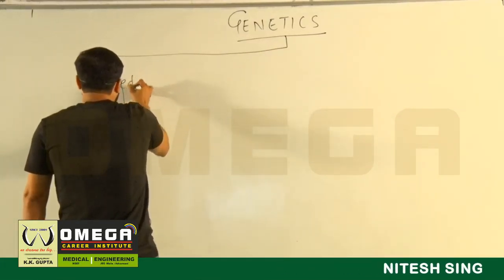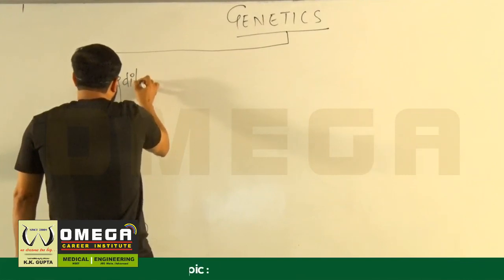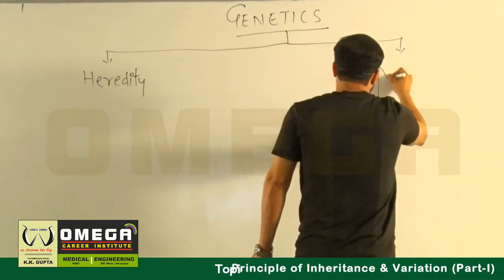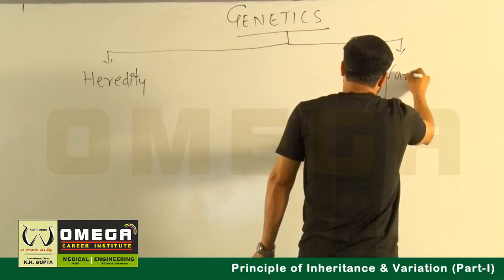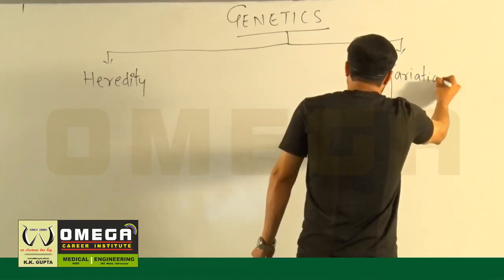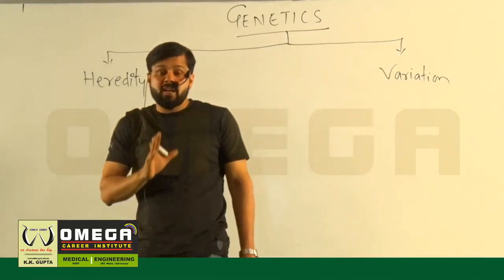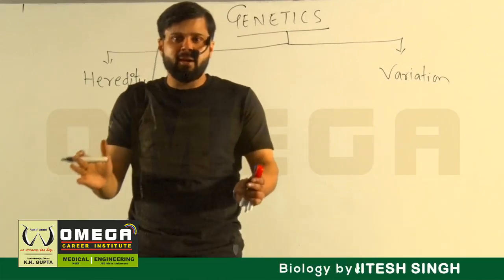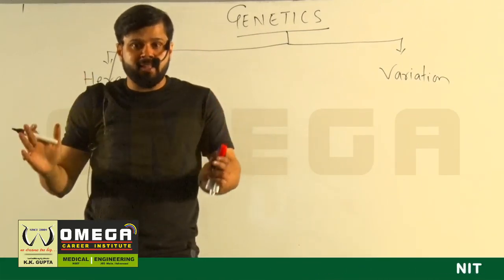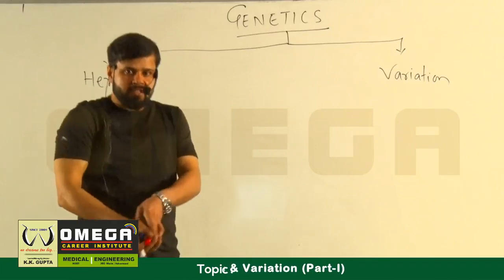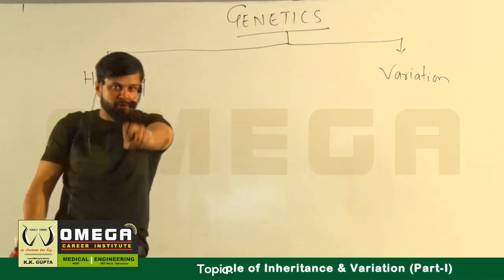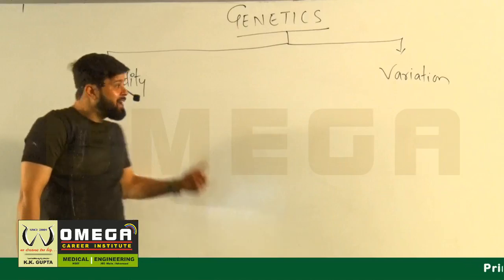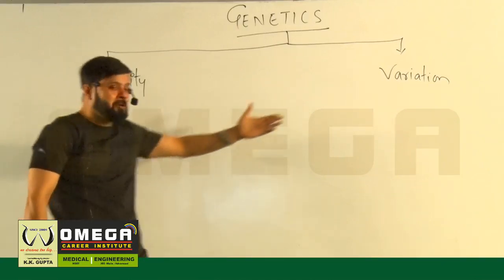The first is heredity and the second is variation. Keep in mind that no matter how big genetics appears, there are only two things we are going to study — only two topics: heredity and variation.